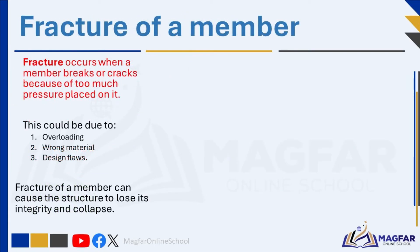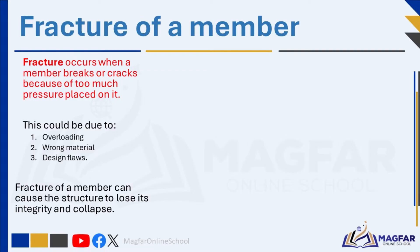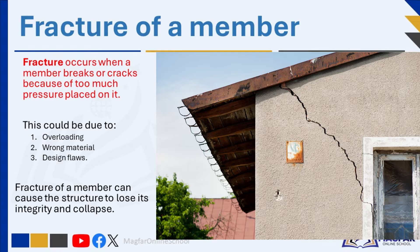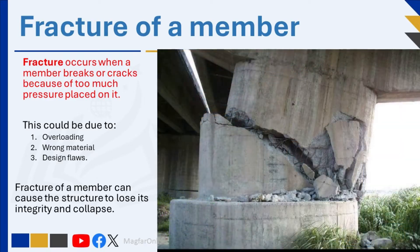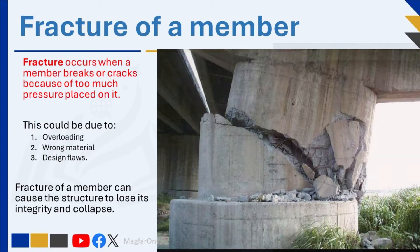Fracture of a member occurs when a member breaks or cracks because of too much pressure placed on it. Fractures are a sign that the structure lacks the strength to support a load placed on it. Strength is the ability of a material to resist breaking under tension or compression. When the strength of a member is exceeded, it causes it to break.